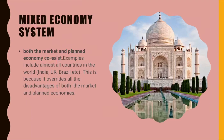A mixed economic system is when both the market and the planned economy co-exist. Examples include India, UK, Brazil, and others — almost all countries follow this system. This is because it overrides the disadvantages of both the market and planned economies. In a mixed economy, there is government intervention alongside a price mechanism driven by private individuals.